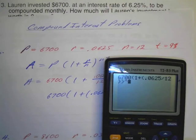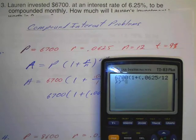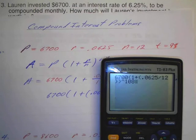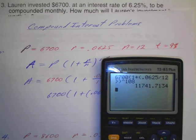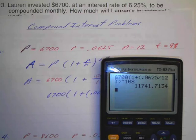Right? Okay. 12 times nine is 108. That means it's going to be compounded 108 times. It's going to be 12 times every year for nine years. So it's going to be compounded 108 times. Press enter. And we're going to end up with $11,741 and about 71 cents.